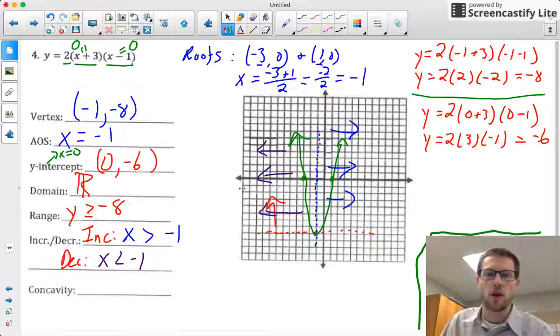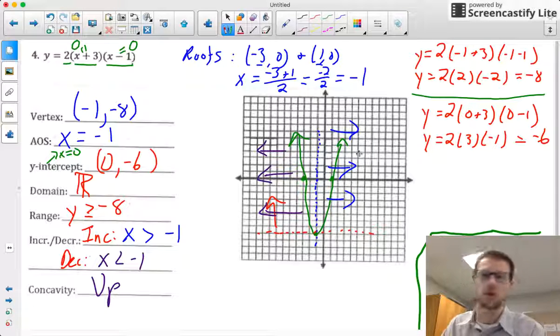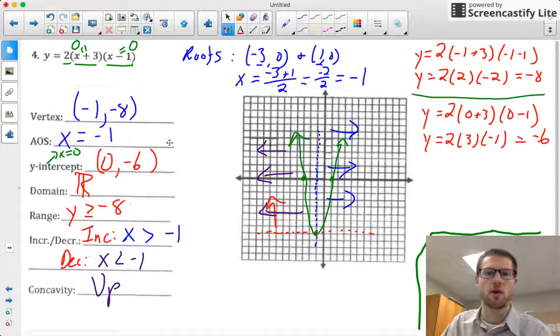And that's the increase-decreasing. Concavity is opening upwards, so I'm concave up. And there we have ourselves a graph with a whole bunch of stuff written all over it and all of these properties.